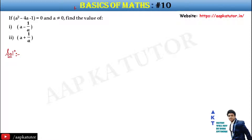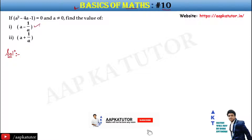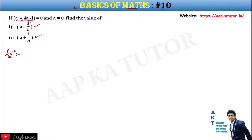Hello guys, welcome to the section of basics of maths, video number 10. We need to find the value of a minus 1 upon a, and a plus 1 upon a, given that a squared minus 4a minus 1 equals 0. Let's try to solve this.